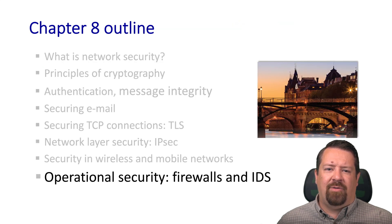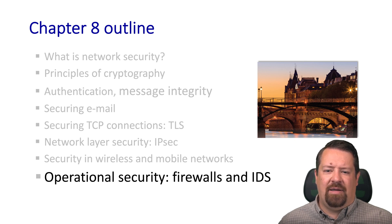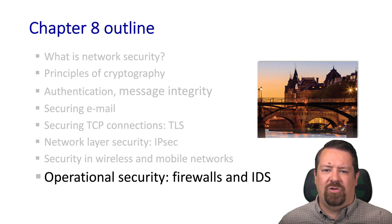That was a high-level overview of security in wireless and mobile networks. It may be worthwhile to revisit this topic with more detailed videos in the future — in particular, seeing the history of progression between 1G, 2G, 3G, and beyond, where there were significant security oversights that have been addressed today. In our next video in this series, we'll be looking at operational security, meaning firewalls and intrusion detection systems.